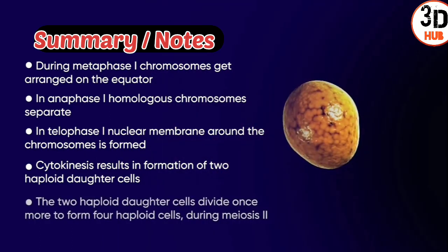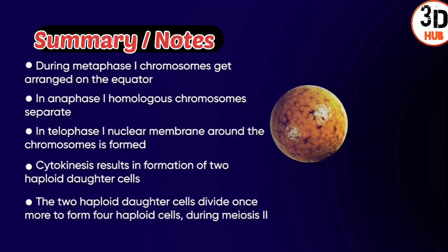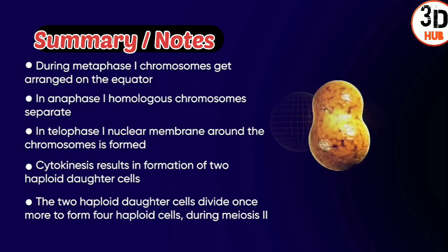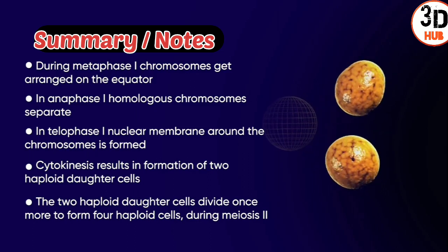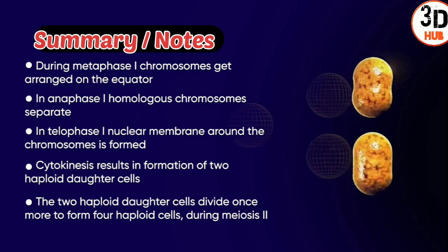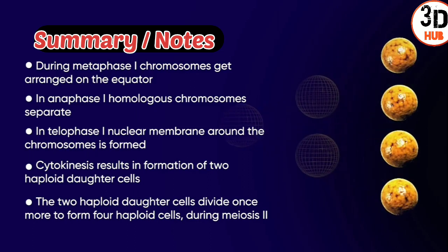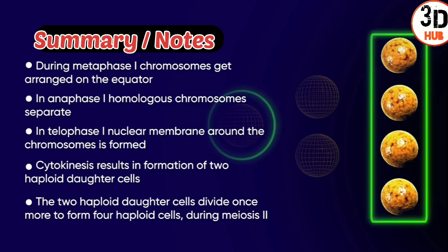These two cells divide once again to form four haploid cells during meiosis 2. Thus, during meiosis, a single cell gives rise to four daughter cells which are haploid.